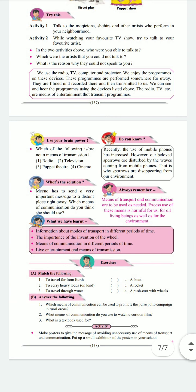Do you know, recently the use of mobile phones has increased. However, our beloved sparrows are disturbed by the waves coming from mobile phones. That is why sparrows are disappearing from our environment. What is the solution? Mina has to send a very important message to a distant place right away — which means of communication do you think she should use? Always remember, means of transport and communication are to be used as needed. Excess use of these means is harmful to us, for all living beings as well as for the environment.